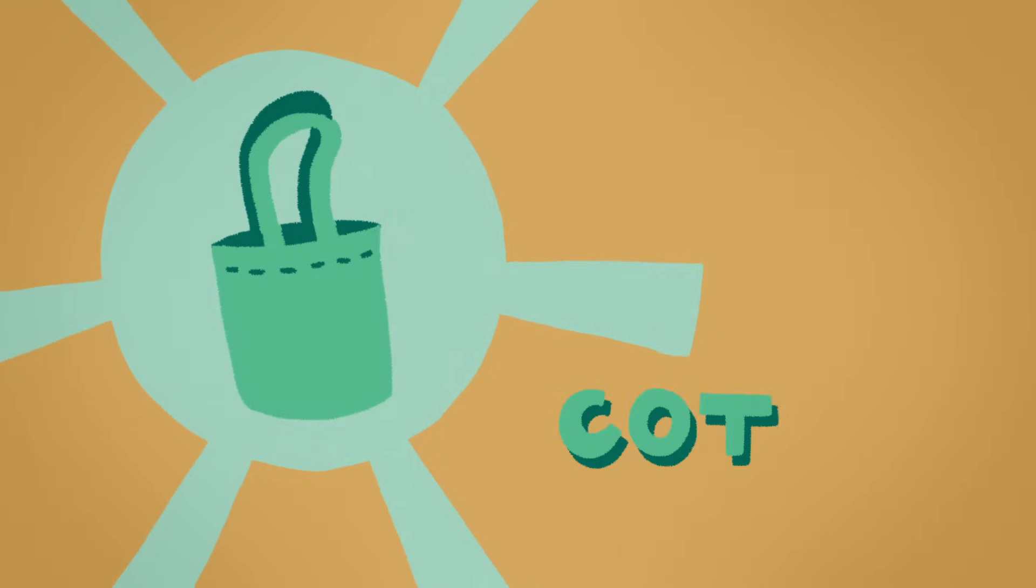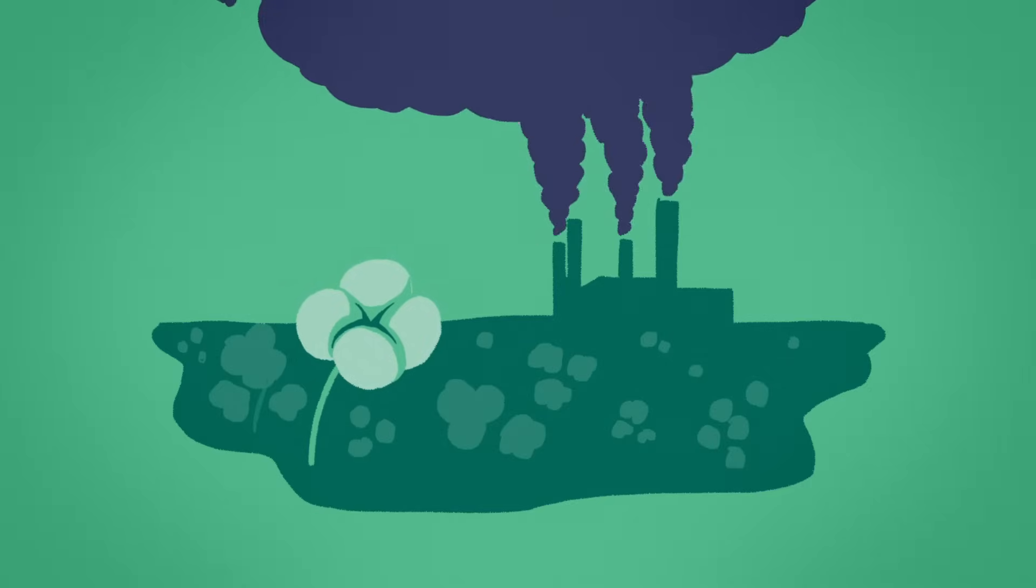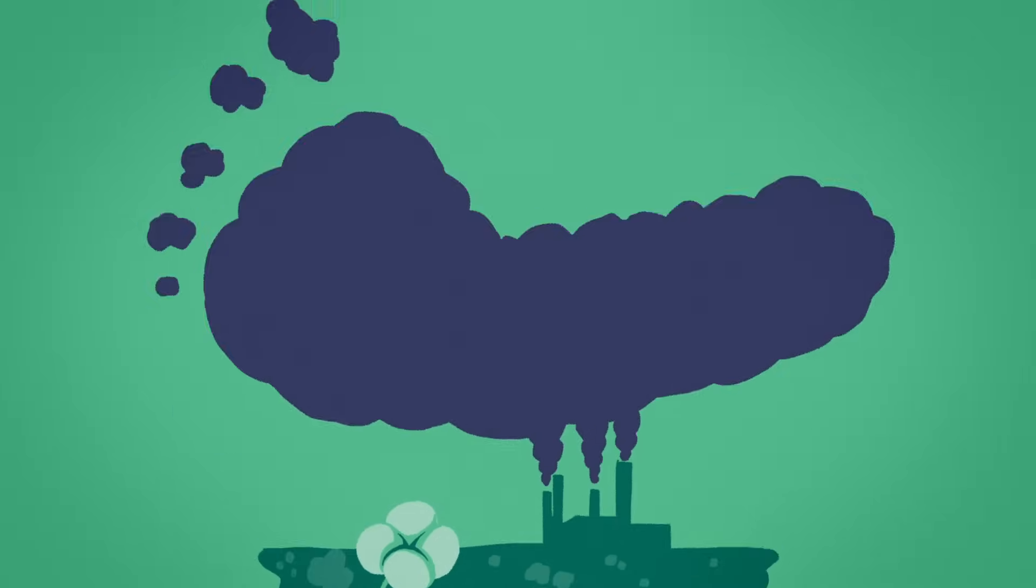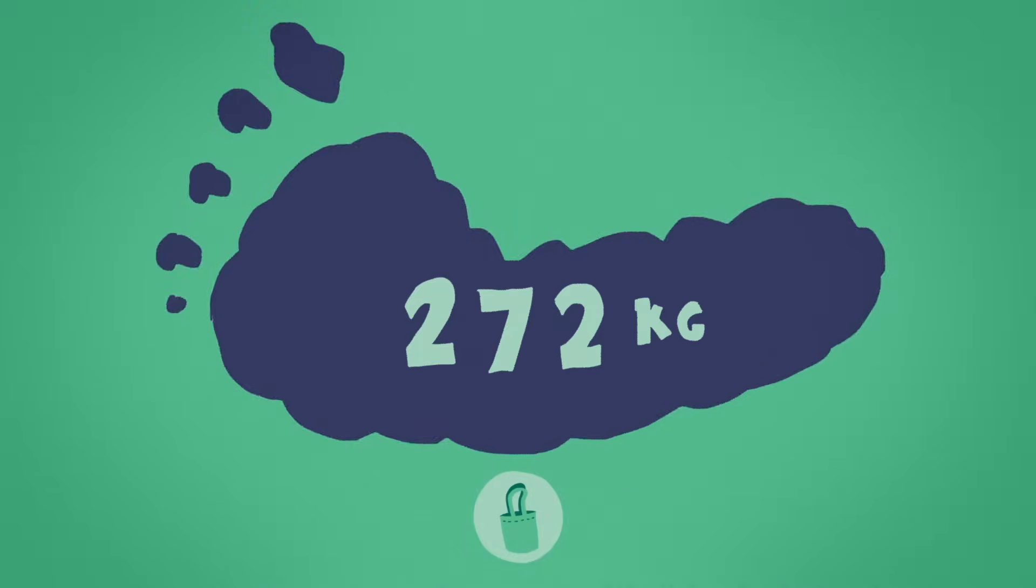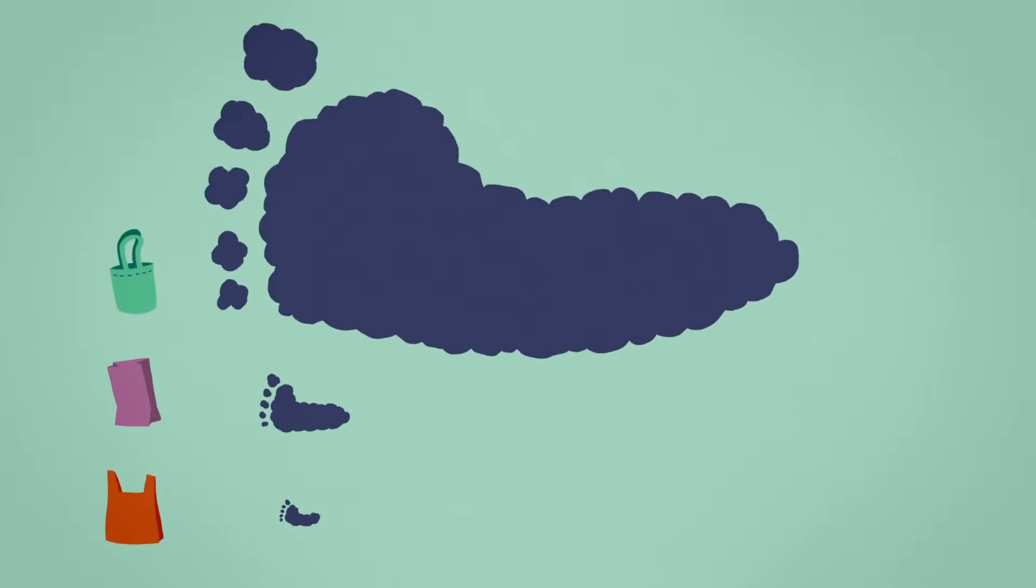Meanwhile, growing cotton is an extremely energy and water intensive process. The production of a single cotton tote emits an estimated 272 kilograms of carbon dioxide. When we compare carbon footprints, plastic bags are the clear winner.